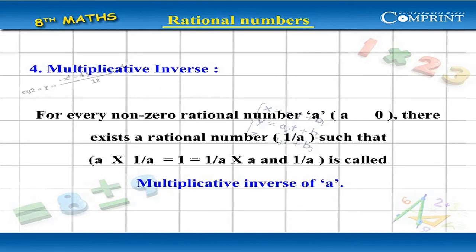4. Multiplicative Inverse: For every nonzero rational number a (a not equal to 0), there exists a rational number 1 by a such that a into 1 by a equal to 1 equal to 1 by a into a, and 1 by a is called multiplicative inverse of a.